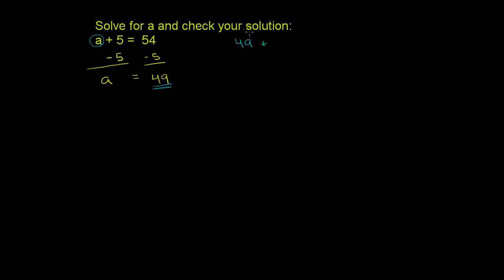49 plus, let me do that in that same shade of green. 49 plus 5 is equal to 54. We're trying to check this. 49 plus 5 is 54, and that indeed is equal to 54. So it all checks out.